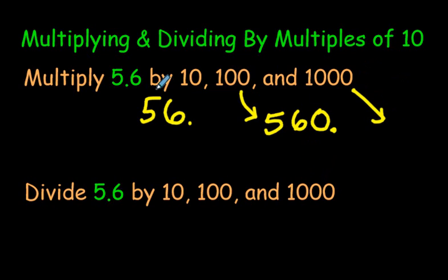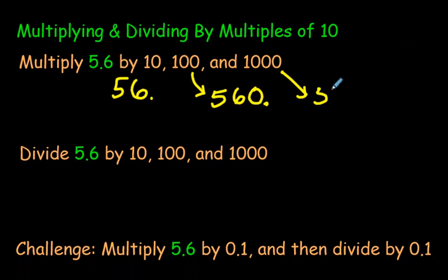And if you take 5.6 and multiply it by 1,000, how many hops do you think that would be? One, two, three. That's right. It would be three. So, it would be one hop, so far it's just 56. Two hops, that would make it 560. Three hops, it would be 5,600. Do you see how fast this is?